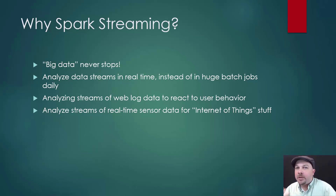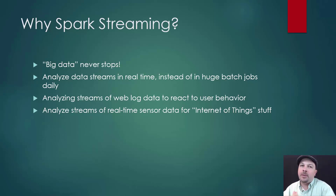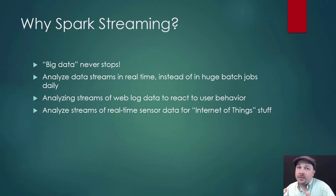But what if you want to update your results in real time? What if instead of processing this giant data set periodically, you just process the new bits that come in as they come and you just keep updating your results over time, basically forever. That's what Spark streaming does — instead of huge batch jobs, you can analyze your data as it comes in one little section at a time and keep aggregating those results as you go.